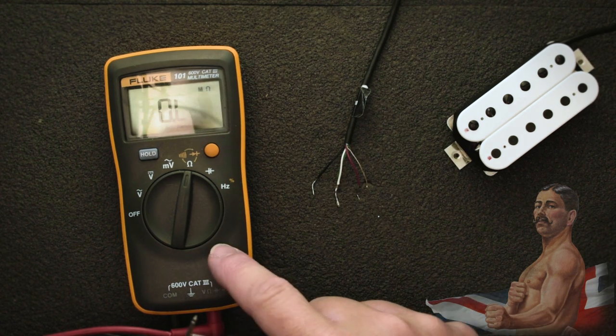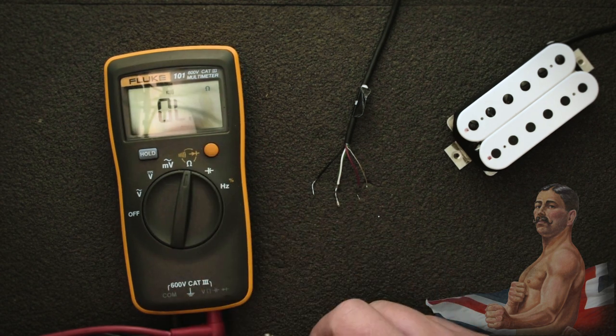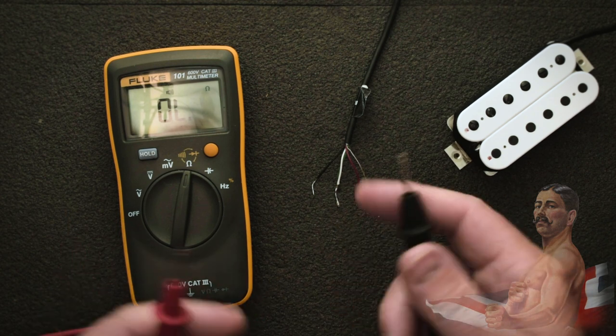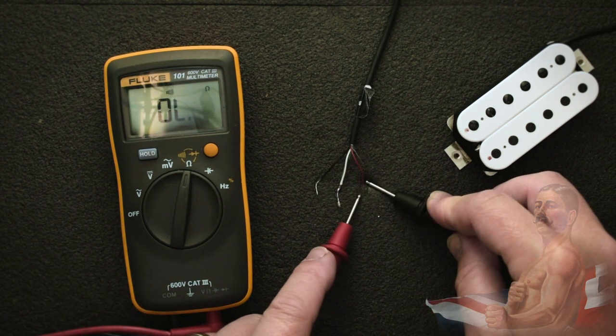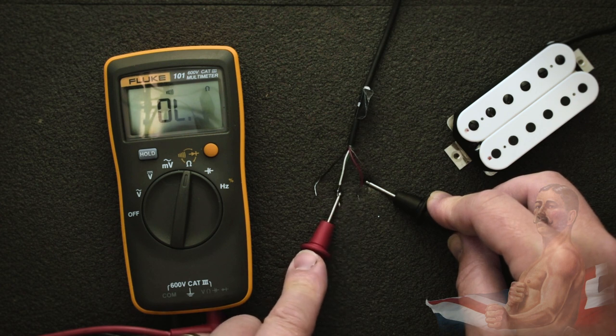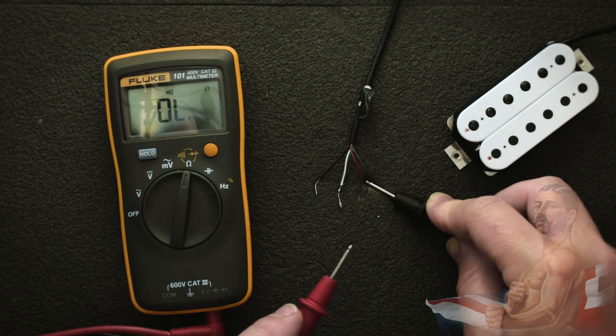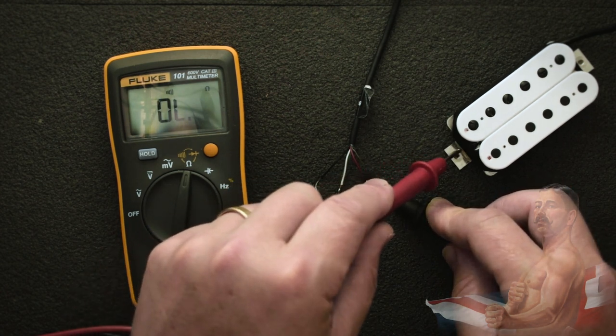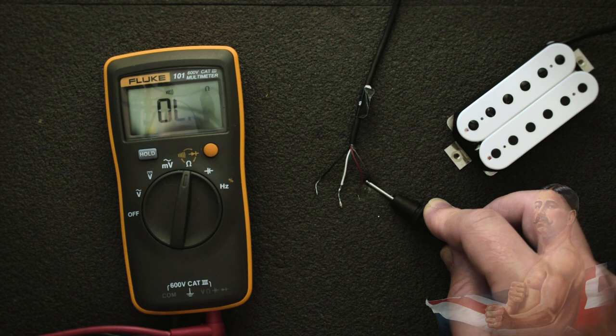Some meters such as this one have an alternative way of measuring this with a dedicated continuity setting on this meter which gives a little beep when you make a circuit between the two probes. You follow exactly the same process on this setting and you're just looking for there to be no beep or buzz depending on your meter. If you measure between the bare wire and the base plate of the pickup we get a beep because the bare wire is connected directly to that base plate in order to give the pickup its ground connection.